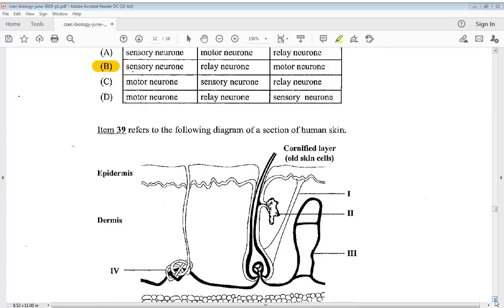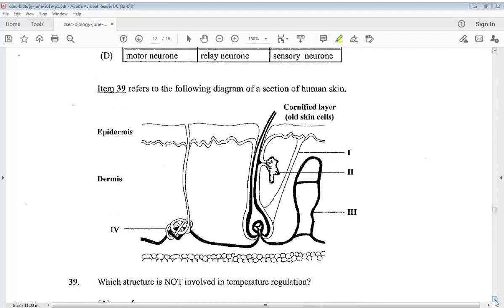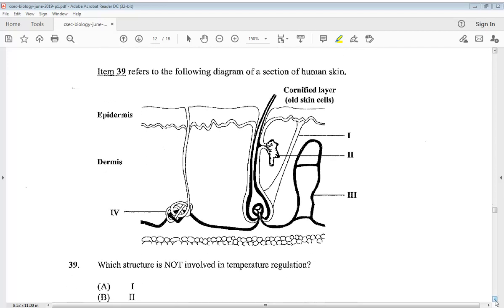Item 39 refers to the following diagram of a section of human skin. We have three labeled parts there. Which structure is not involved in temperature regulation? So it would be at two, so the answer would be B.